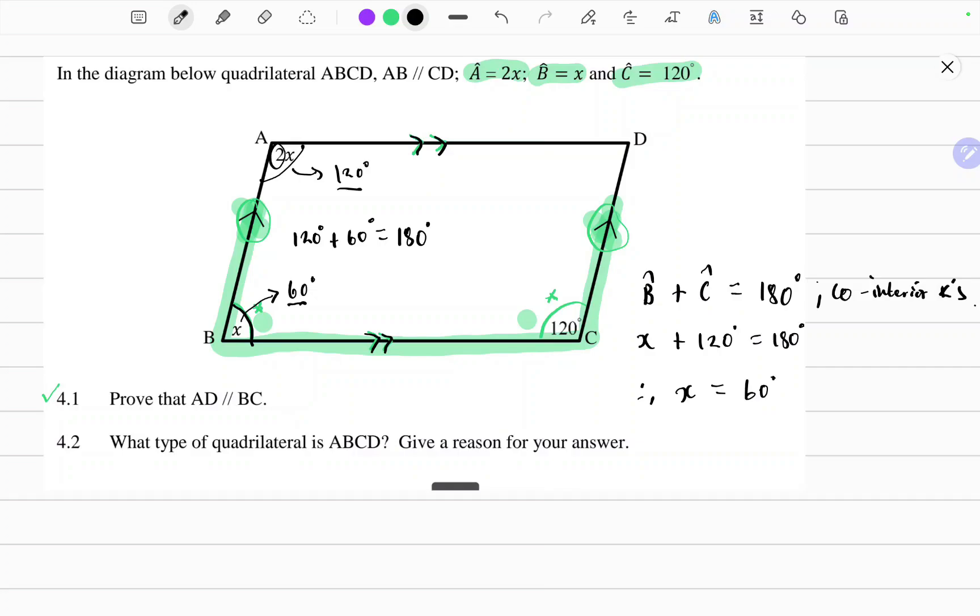So that's the proof. The proof is angle A and angle B are co-interior interior angles. Therefore, AD is parallel to BC.